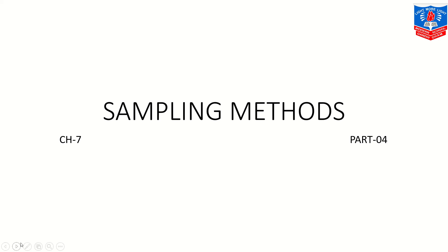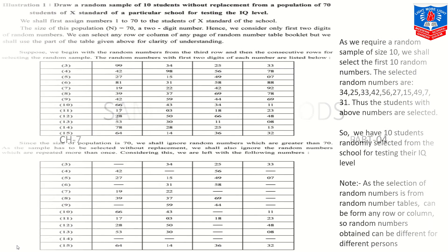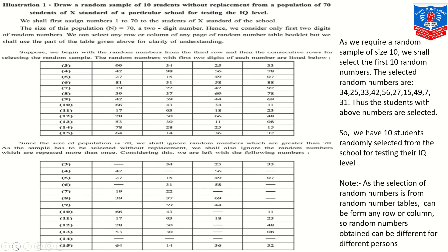Hello, my dear learners. I am continuing with the same chapter of statistics — the chapter on sampling methods. In this class, I'll start with the practical part of the chapter. We need to draw a random sample of 10 students without replacement from a population of 70 students of standard 10th of a particular school for testing the IQ level.